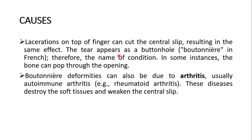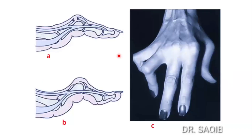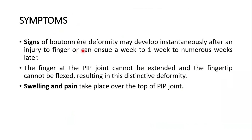Boutonnière deformities can also be due to arthritis, usually rheumatoid arthritis — an autoimmune arthritis. These diseases destroy the soft tissues and weaken the central slip. Signs of the Boutonnière deformity may develop instantly after an injury or can show one to numerous weeks later. The proximal interphalangeal joint cannot be extended and the fingertip cannot be flexed, resulting in this distinctive deformity. Swelling and pain take place over the top of the proximal interphalangeal joint.